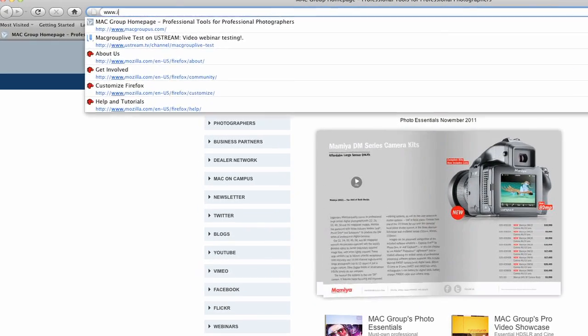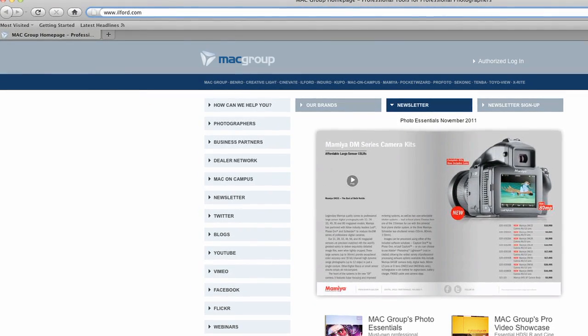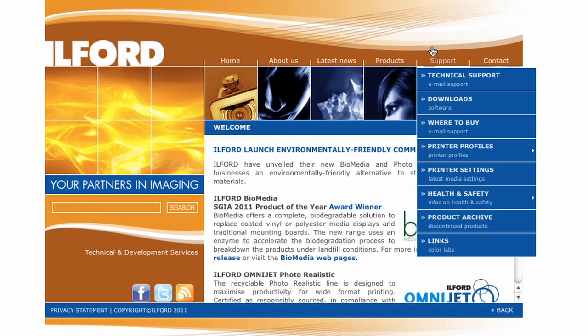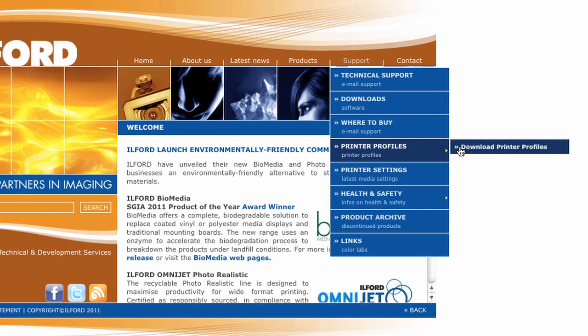First step is pretty easy. We're going to go to www.ilford.com. From here we're going to go to the navigation bar which is up top and select support and then printer profiles. Then you're going to go across to download printer profiles.